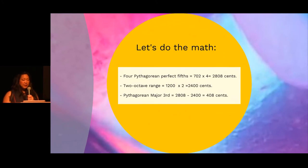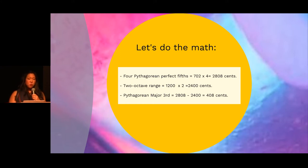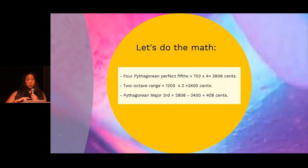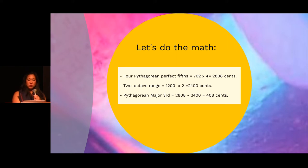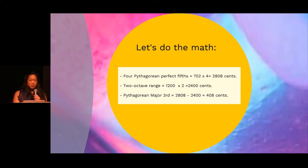The math behind this can help you better understand the pitch difference. Four Pythagorean perfect fifths, which are 702 cents, times four equals 2,808 cents. These four perfect fifths take up a two-octave range, which is 1,200 cents times two — you get 2,400 cents. If we subtract those two sums, we are left with a Pythagorean major third: 2,808 minus 2,400 gives us 408 cents. This is the Pythagorean major third, which is quite big compared to the just major third.